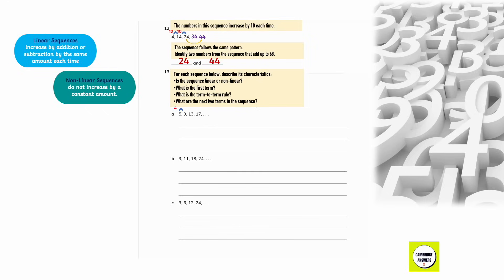Describe each of the sequences below. Is the sequence linear or non-linear? What is the first term? What is the term-to-term rule? What are the next two terms? For the sequence 5, 9, 13, 17: the difference between 9 and 5 is 4, and between 13 and 9 is 4 — this is a linear sequence. The first term is 5, the term-to-term rule is add 4, and the next two terms are 21 and 25.